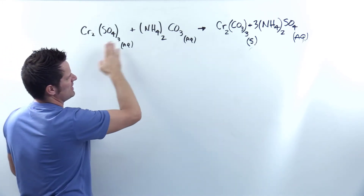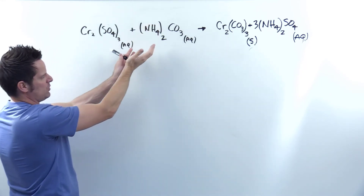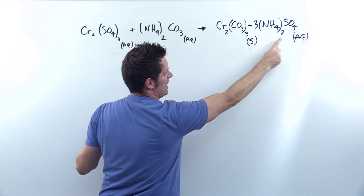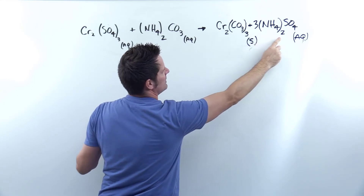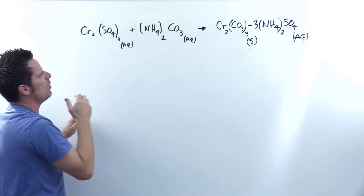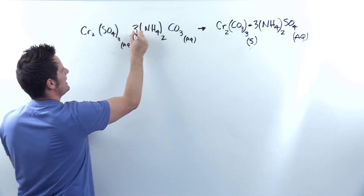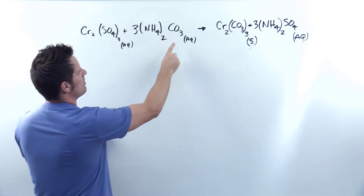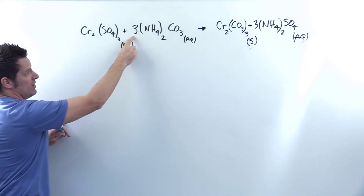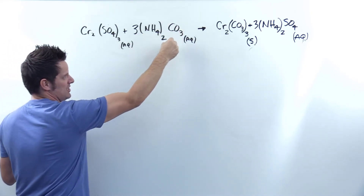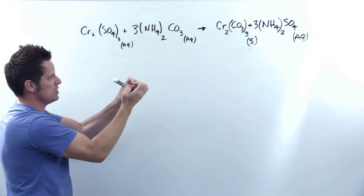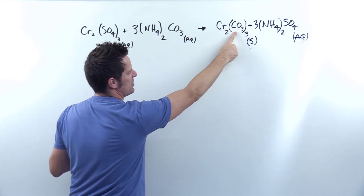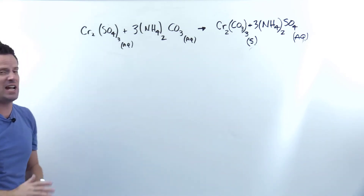For NH4: on the left there are two NH4s. On the right, the 3 coefficient times the subscript 2 gives six NH4s. Adding a coefficient of 3 in front of the ammonium carbonate fixes this — now six NH4s on each side. For carbonate CO3: on the left, the 3 coefficient multiplies through to give three CO3s. On the right, there are three CO3s from the subscript 3 in parentheses. Everything is now balanced. Step 3 is done.